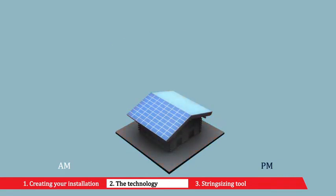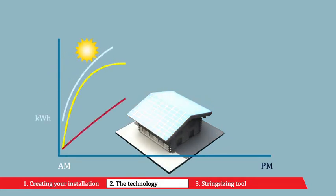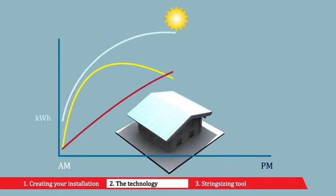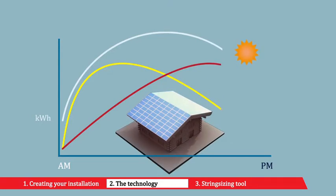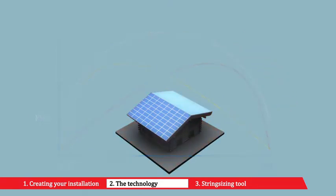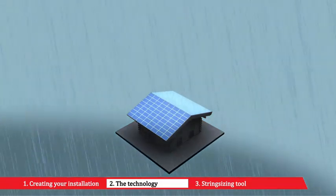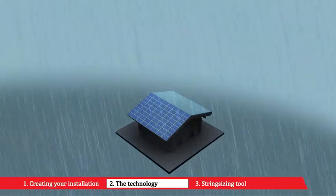Dual MPPT, short for Maximum Power Point Tracking, is technology developed by PowerOne to maximize energy harvesting during different hours of the day or changing weather conditions. Your PowerOne inverter is constantly checking for the optimum configuration of your solar panel's output to ensure the maximum total energy being harvested.